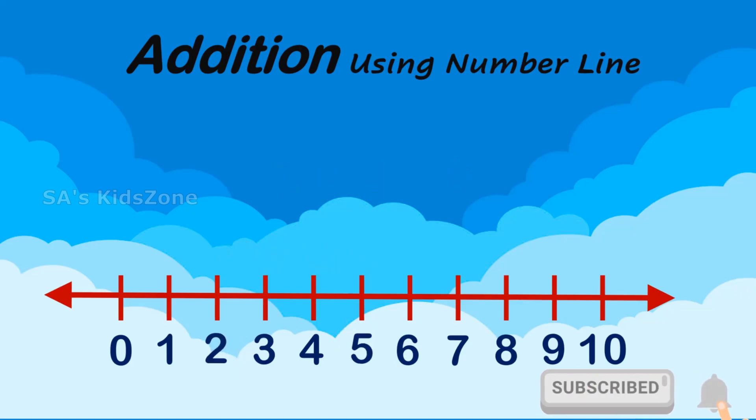Kids, now let's try another sum. To find the sum of 4 and 2, we have to start at number 4 and jump forward to the right side for 2 numbers.